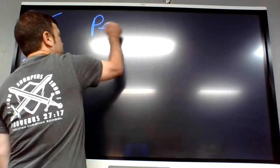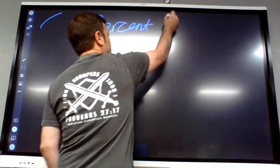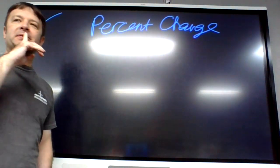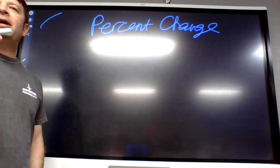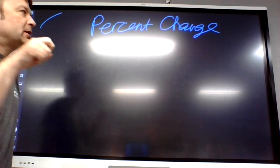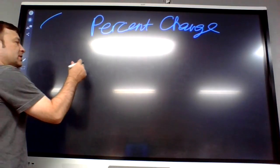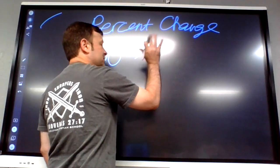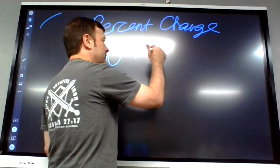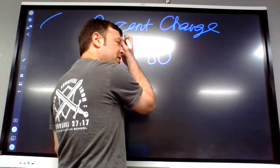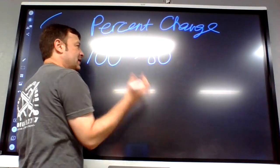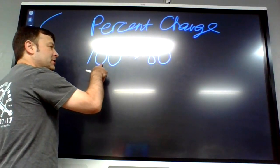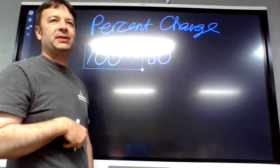Today we're talking about percent change. This is used all over the place in life — money, population, just anything. Any kind of thing can have a percent change. So if something drops from 100 to 80, what percent did it change?